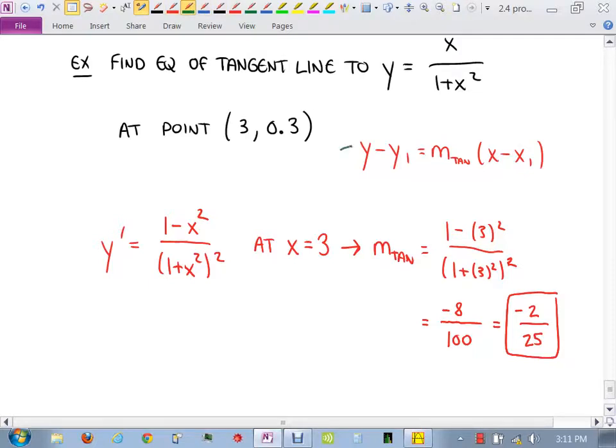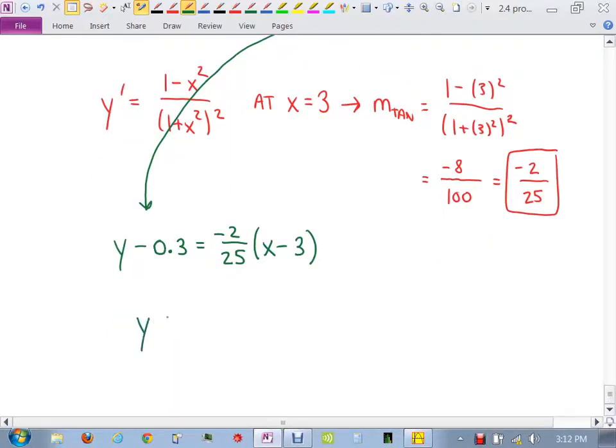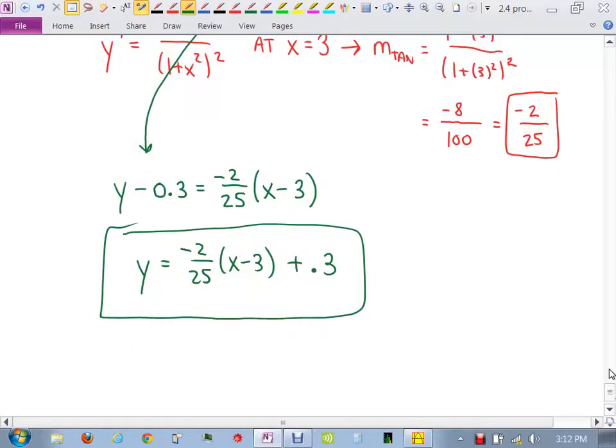So now going back to the equation, it'll be y minus 0.3 equals negative 2 over 25, x minus 3. So y equals negative 2 over 25, x minus 3 plus 0.3. I'm not going to distribute the negative 2 over 25 through the parentheses. I'm just going to leave it. All I did was move the 0.3 to the other side. Questions on that? All right.